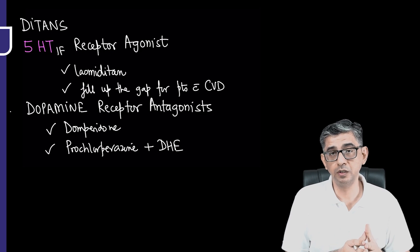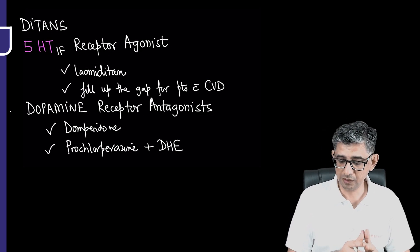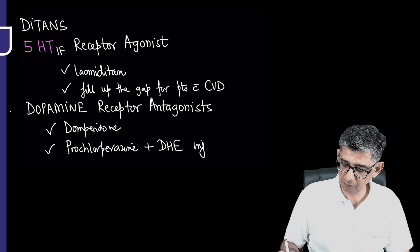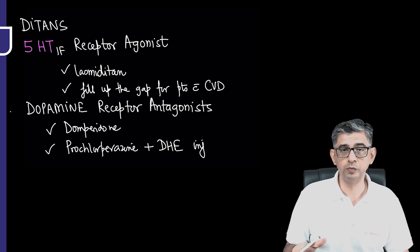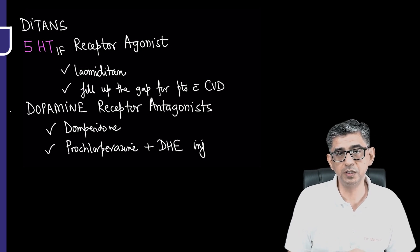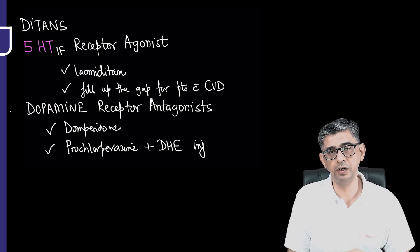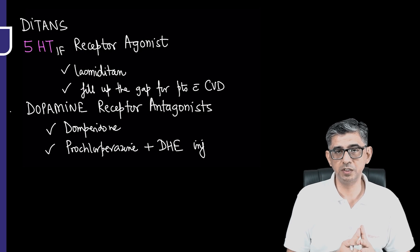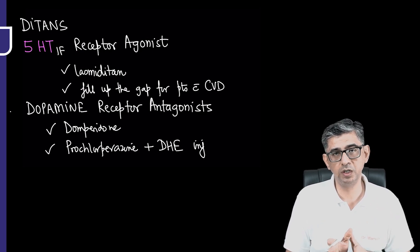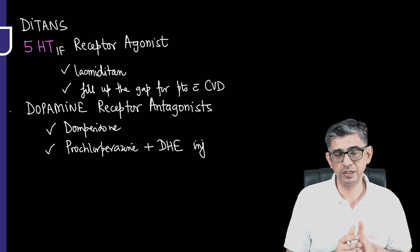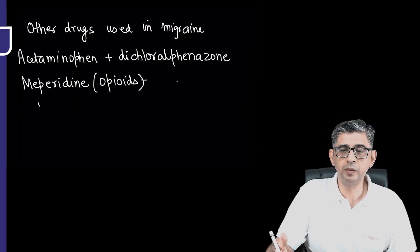In these patients, injection of prochlorperazine which can be given even intravenously slowly along with dihydroergotamine can be useful, especially in those situations where in emergency supply we are not having sumatriptan available and a patient has presented to us with a severe attack which has been going on for even a duration more than 72 hours, which is taken as a cutoff for status migrainosus.